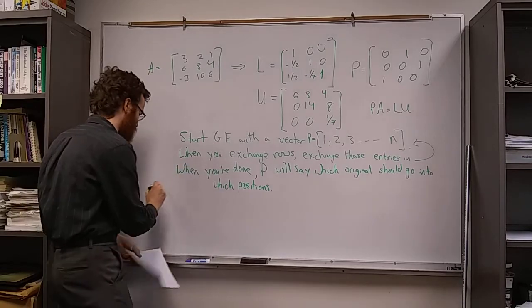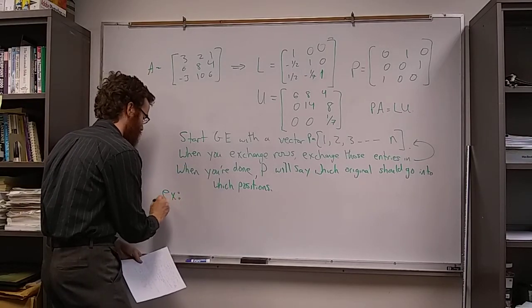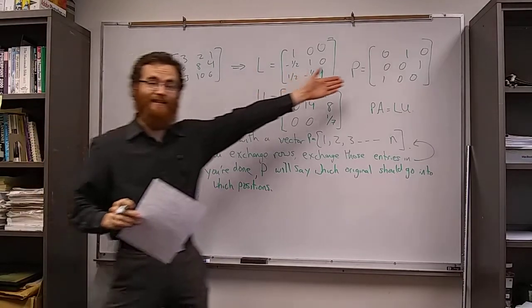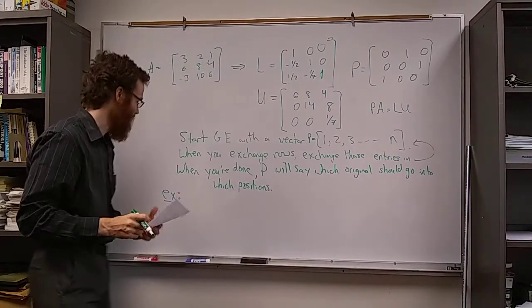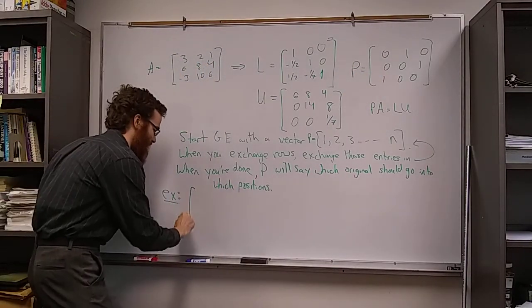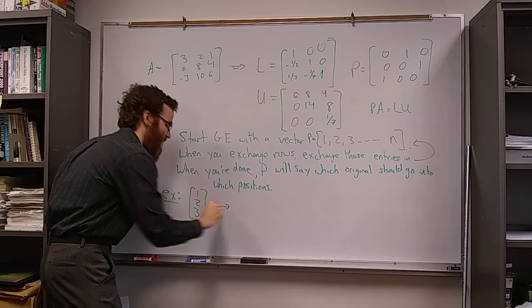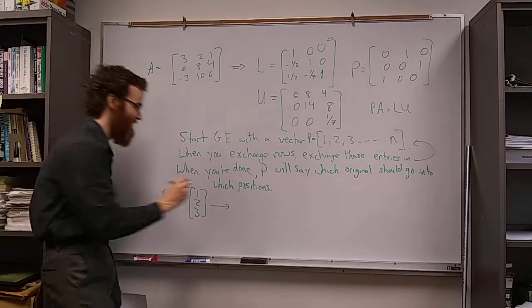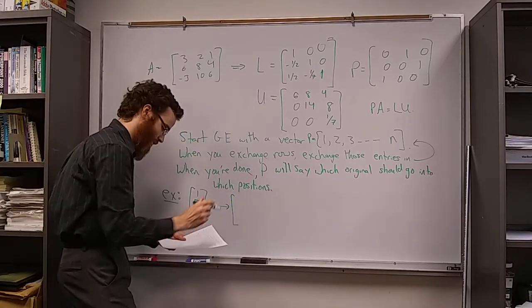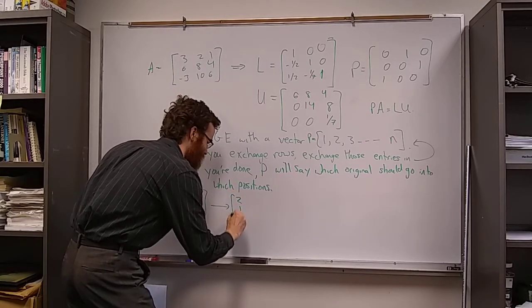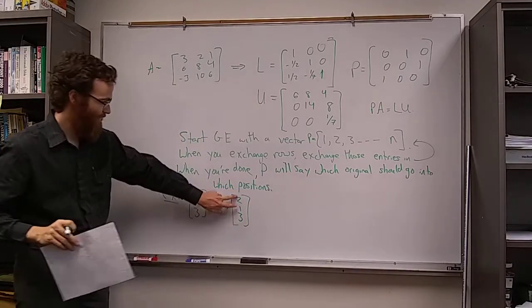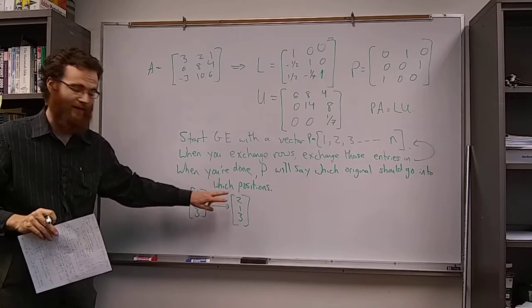So for our earlier example where we did this one, we would start out with a vector 1, 2, 3. And the first row exchange we did during this elimination, we switched the first and the second rows, so we would switch the first and second position.